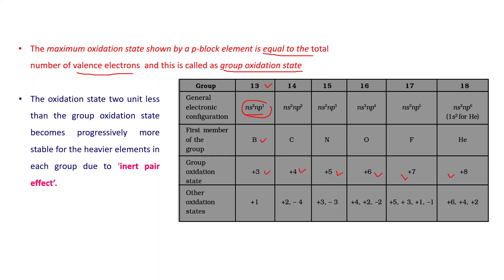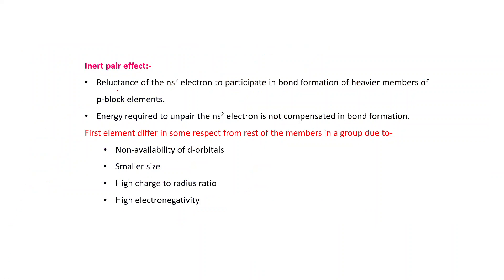P-block elements also show oxidation states two units less than the group oxidation state, which becomes progressively more stable for heavier elements in each group due to the inert pair effect. For heavier members of group 13, +1 is more stable; for group 14 heavier members, +2 is stable; and so on down the group, each showing a stable oxidation state two units less than the group value.